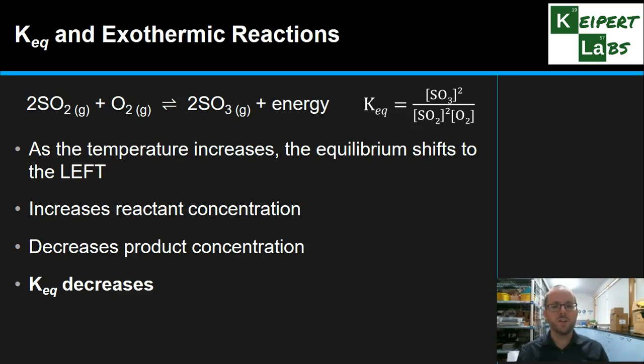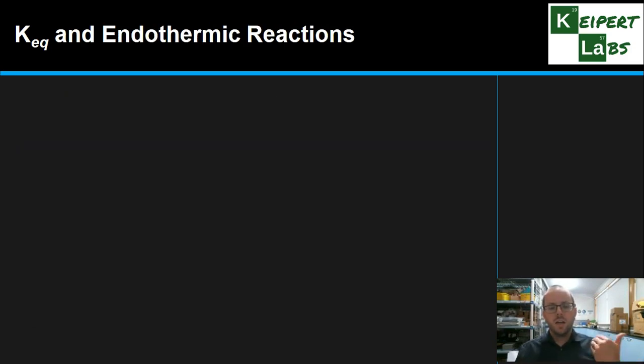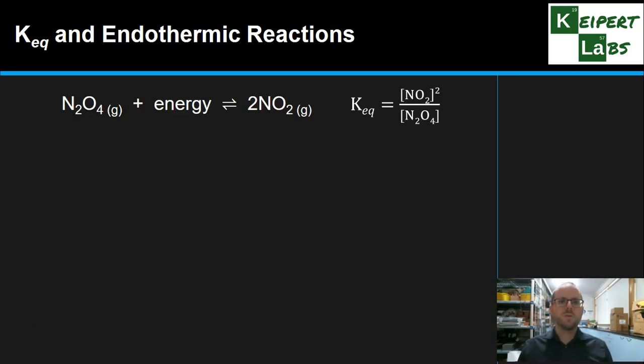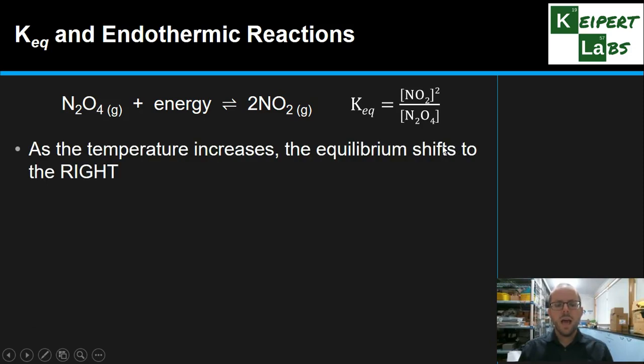But what about an endothermic reaction? What about if we do that? So, let's look at this example. Going from N2O4 to nitrogen dioxide absorbs energy. This is our K expression over here. As we increase the temperature of this system, instead of shifting to the left, we shift to the right. That is, in order to try and use up that extra energy that has been done, we favor the forward reaction.